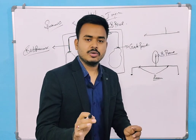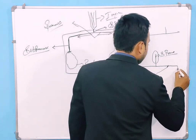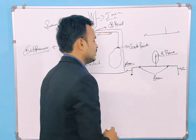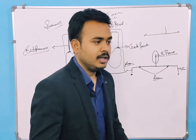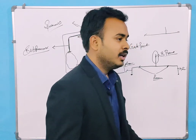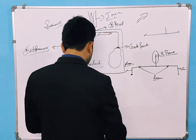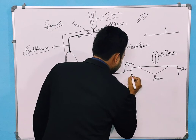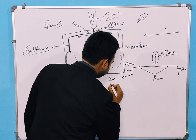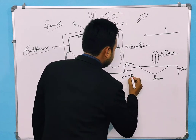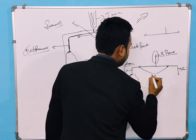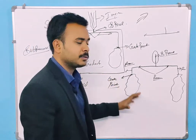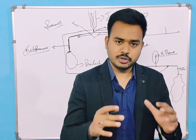In some molds there is also a sub-runner, which is a part of the runner. For example, if there is a tree, the branches are part of that tree — similarly, a sub-runner is a part of the runner. At last there is the gate point, where the product is finally formed. This completes the feed system: sprue, runner, and gate.